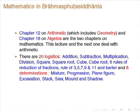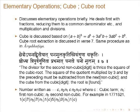This lecture and the next deal with arithmetic. In arithmetic he talks about 20 logistics: addition, subtraction, multiplication, division, square, square root, cube, and cube root. There are six rules of reduction of fractions, then rule of proportions — rule of 3, 5, 7, 9 and 11. And what he calls 8 determinations: mixture, progression, plane figures, excavations, stacks, saw, mound, and shadow. Elementary operations are discussed only briefly, as people are expected to know them already.